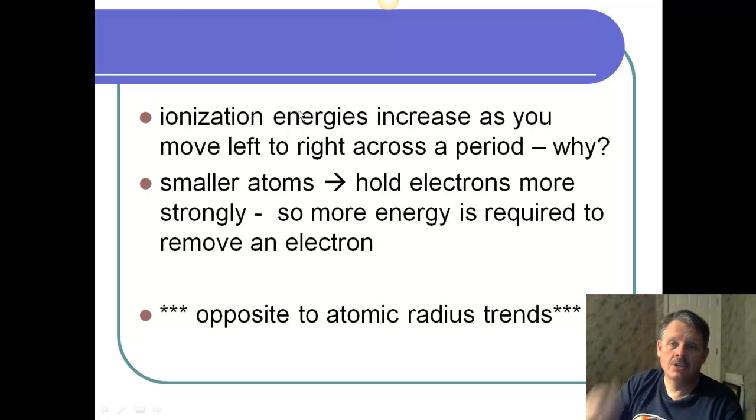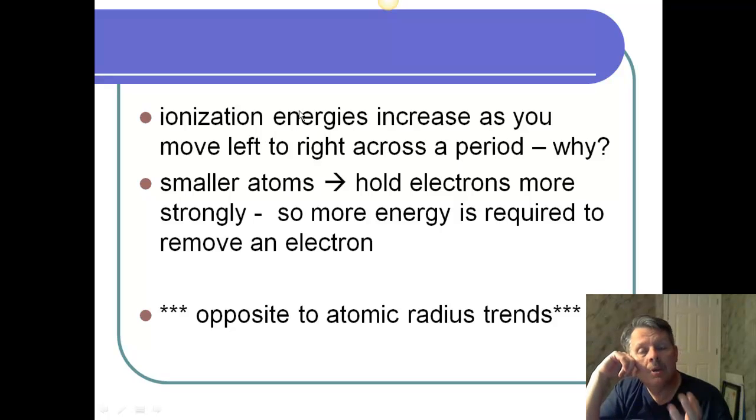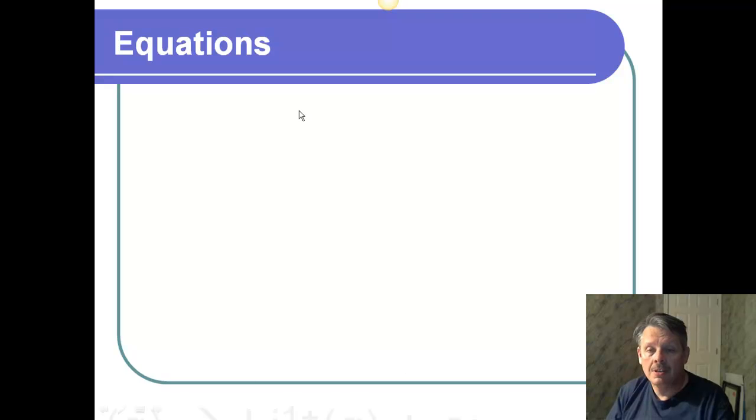So ionization energy increases as you move left to right. Why? Because on the right-hand side, they're smaller. The smaller items hold the electrons more strongly. So more energy is required to remove the electron. And notice this is the opposite of your atomic trends. Because as something gets smaller in size, it becomes harder to take an electron away. If it becomes bigger in size, it's easier to take an electron away.